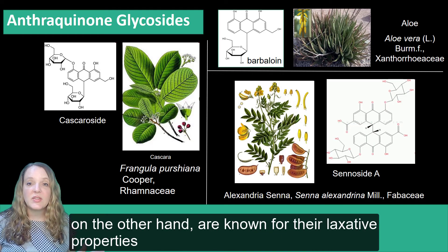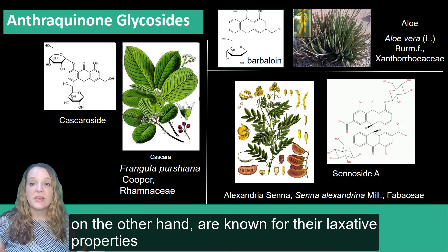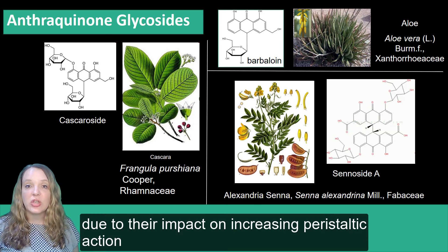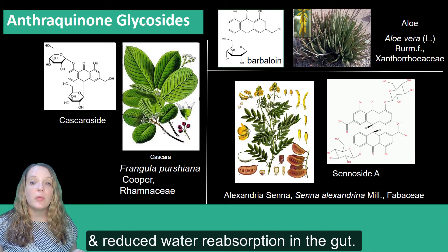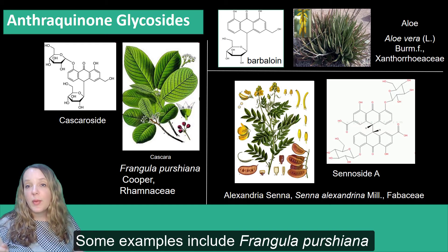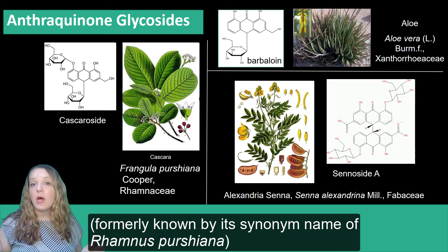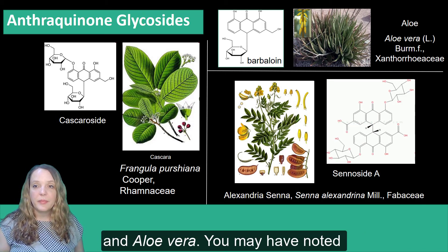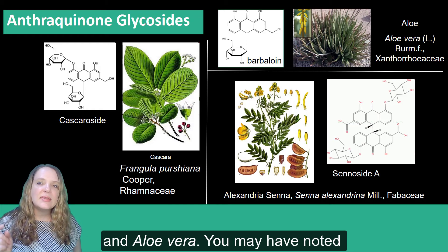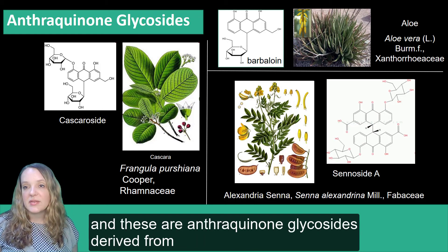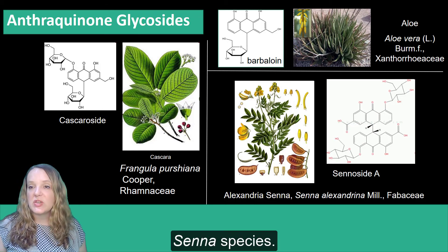Anthraquinone glycosides, on the other hand, are known for their laxative properties due to their impact on increasing peristaltic action and reduced water reabsorption in the gut. Some prominent examples include Frangula purshiana, formerly known by its synonym Rhamnus purshiana, and aloe vera. You may have also noted sennosides for sale in the pharmacy as a natural stimulant laxative, and these are actually anthraquinone glycosides derived from Senna species.